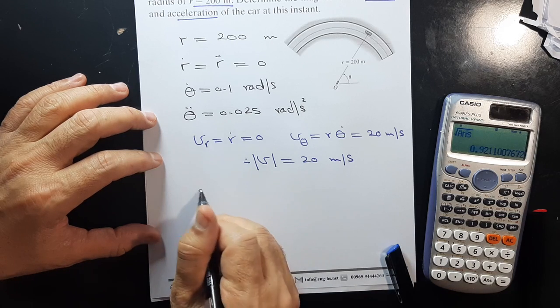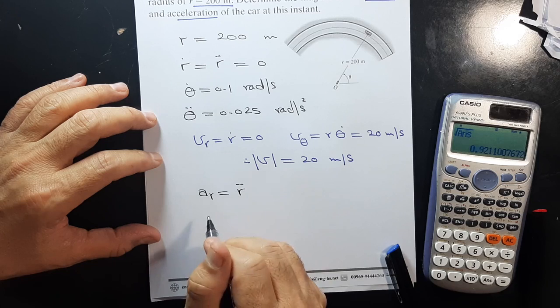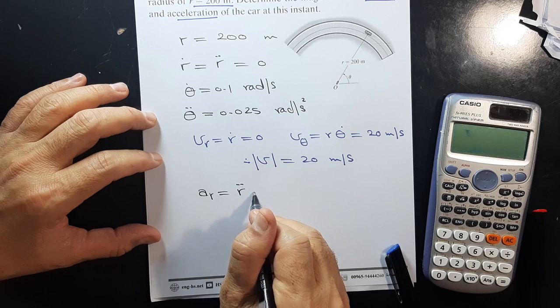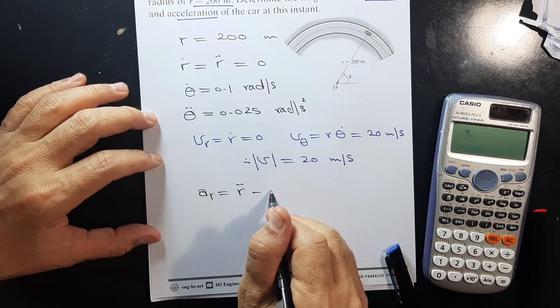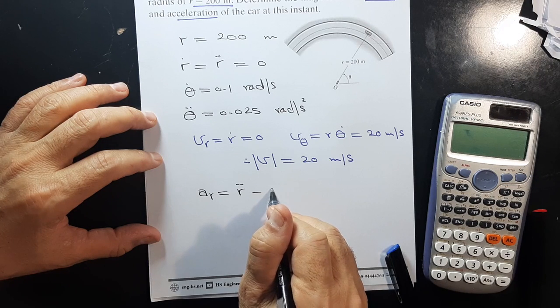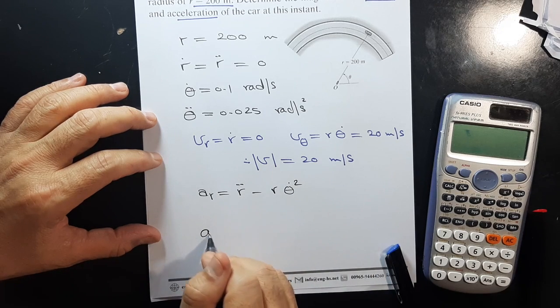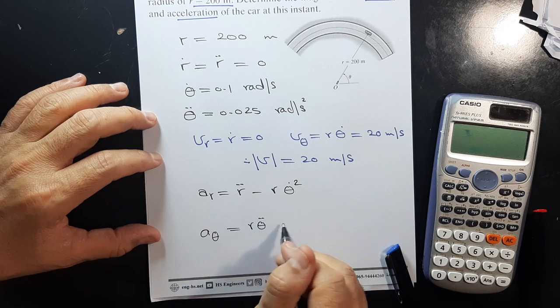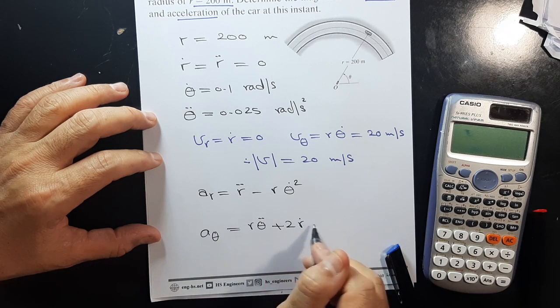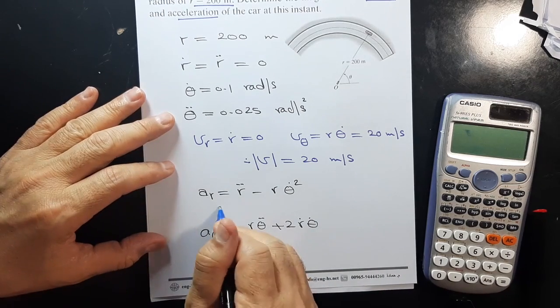For ar, ar = r̈ minus r θ̇². And aθ = r θ̈ + 2ṙ θ̇. These are in your formulas or on the sheet.